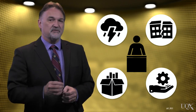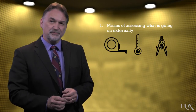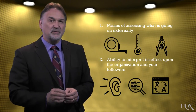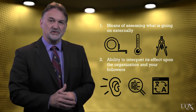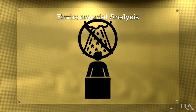This requires two things: firstly, the means of assessing what is going on in the external environment, and secondly, the ability to interpret its effect upon the organisation and your followers. The first is achieved by what is known as an environmental analysis. An environmental analysis is not supposed to see all things — that would be impossible. Rather, it focuses upon those things that may have an effect upon the vision of the organisation. So an external analysis starts with the vision in mind and asks questions about the present environment and particularly where it is trending.